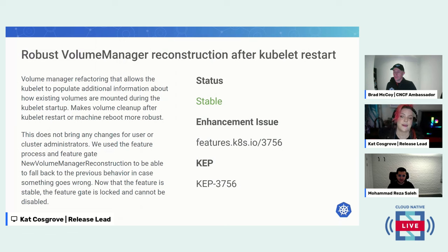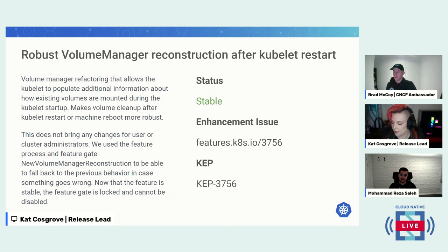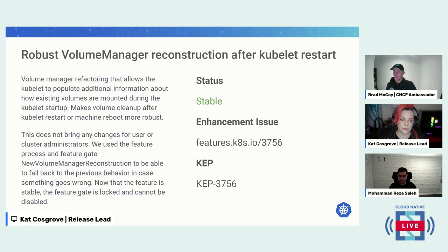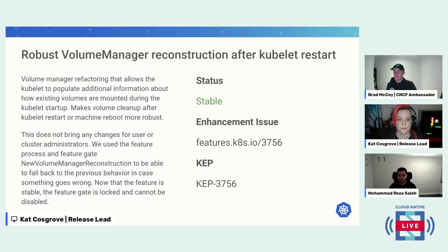The first major theme graduated to stable in 1.30 is called Robust Volume Manager Reconstruction After Kubelet Restart. Basically, when the kubelet is restarted it loses track of all volumes it mounted for running pods. This process was not perfect before, and this enhancement fixes some bugs in parts of the kubelet. There are no changes to any API or data structures. This feature can be disabled or enabled by a new VolumeManagerReconstruction feature gate.